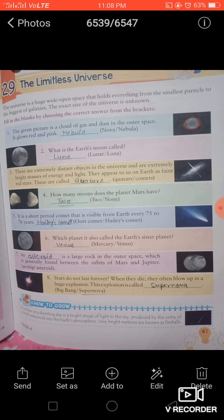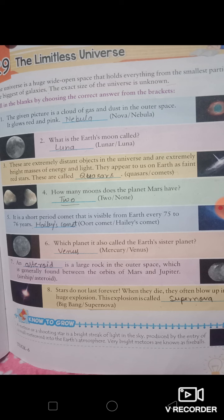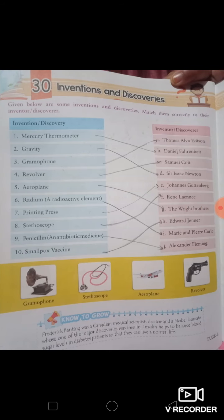The next exercise is 29, The Limitless Universe. Here there are questions related to our universe. The first question asks about a cloud of gas and dust in outer space that glows red and pink — it is called a nebula. The scientific name of Earth's moon is lunar. Revise all these questions and prepare accordingly.